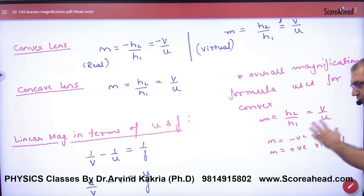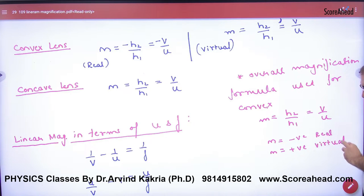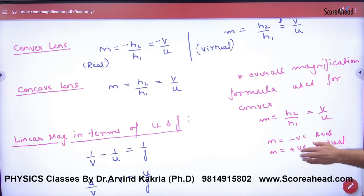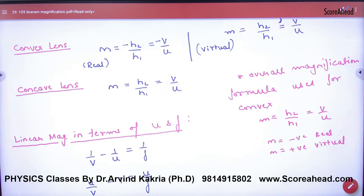When we apply sign convention in numericals, the answer will come out positive or negative automatically. For a real image, magnification will be negative. For a virtual image, magnification will be positive. Just remember this — and when numericals come, the answer will be positive or negative accordingly. These two rules of magnification are clear.